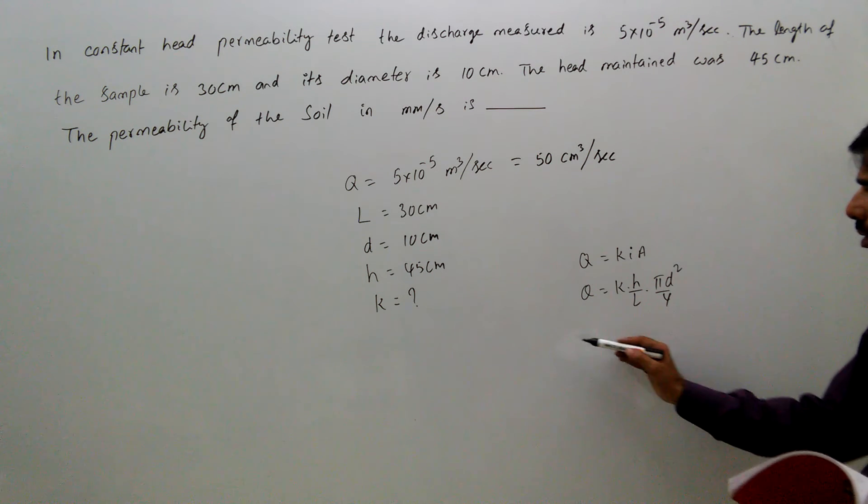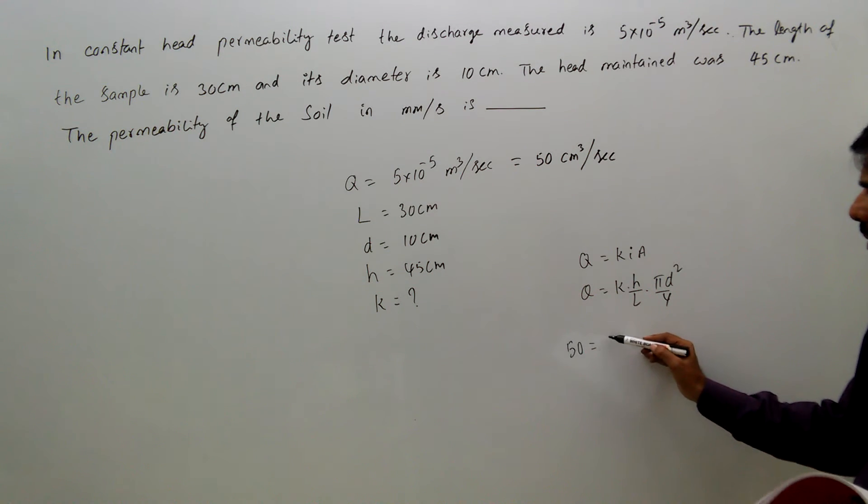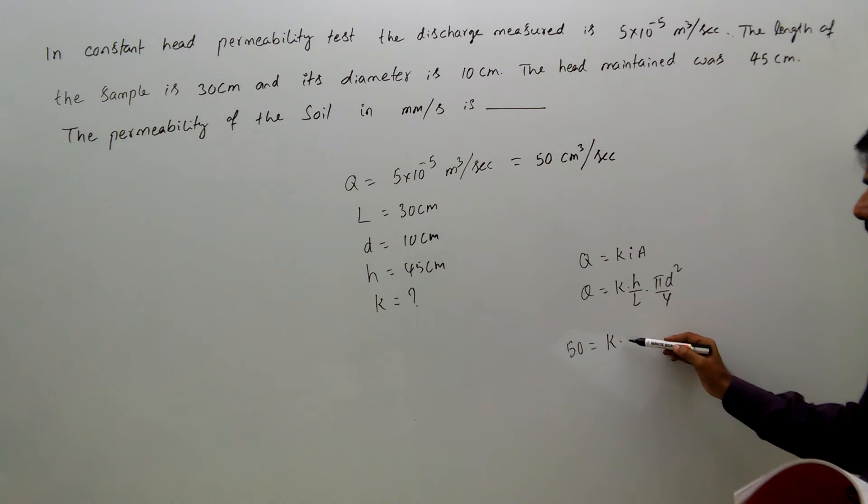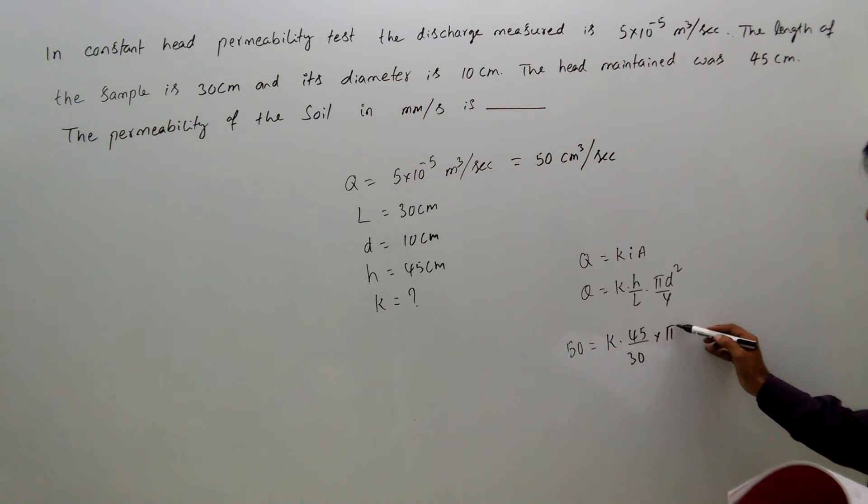Substituting here, 50 = k×(h/L)×(π/4)×d², which is k×(45/30)×(π/4)×10².